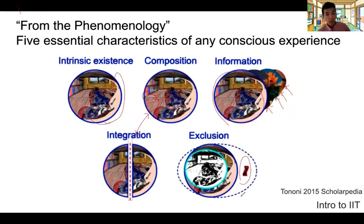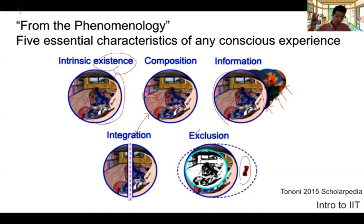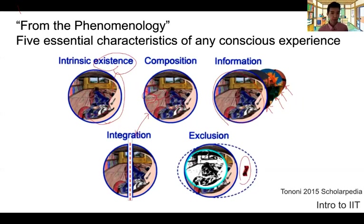So after intrinsic existence, we have four characteristics — composition, information, integration, and exclusion — that specify and characterize any moment of conscious experience. Those are the phenomenological axioms of IIT.